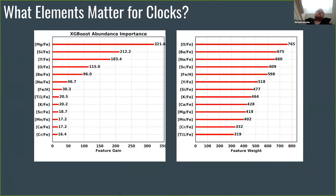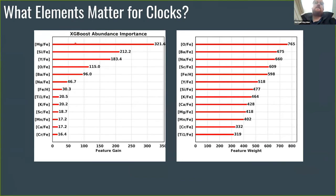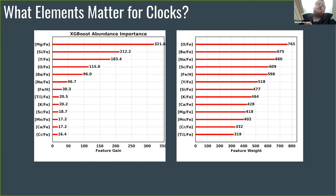What elements matter most for the chemical clock? XGBoost found the two most important elements are magnesium and silicon — your alpha elements — followed by yttrium, then oxygen and barium. The main take-home is: you need the overall metallicity, plus a magnesium or an alpha element, plus an S-process element. Those three alone give you a pretty good age estimate, and the other elements just help beat down noise.